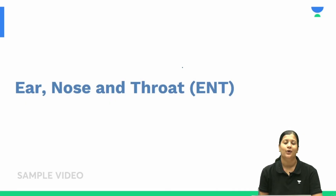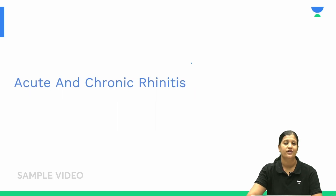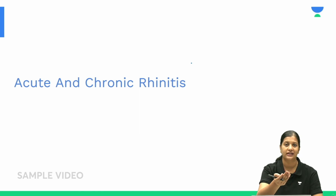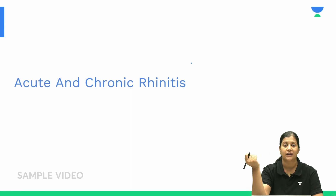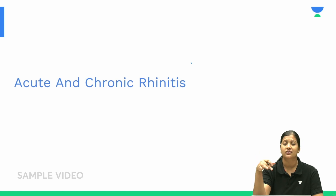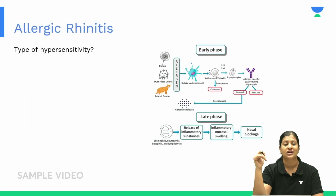Welcome back to this session on rhinitis. We're going to study different forms of rhinitis — from allergic rhinitis to atrophic rhinitis, non-allergic rhinitis, drug-induced rhinitis, rhinitis medicamentosa, rhinitis sicca, and rhinitis caseosa. Let's begin with allergic rhinitis.